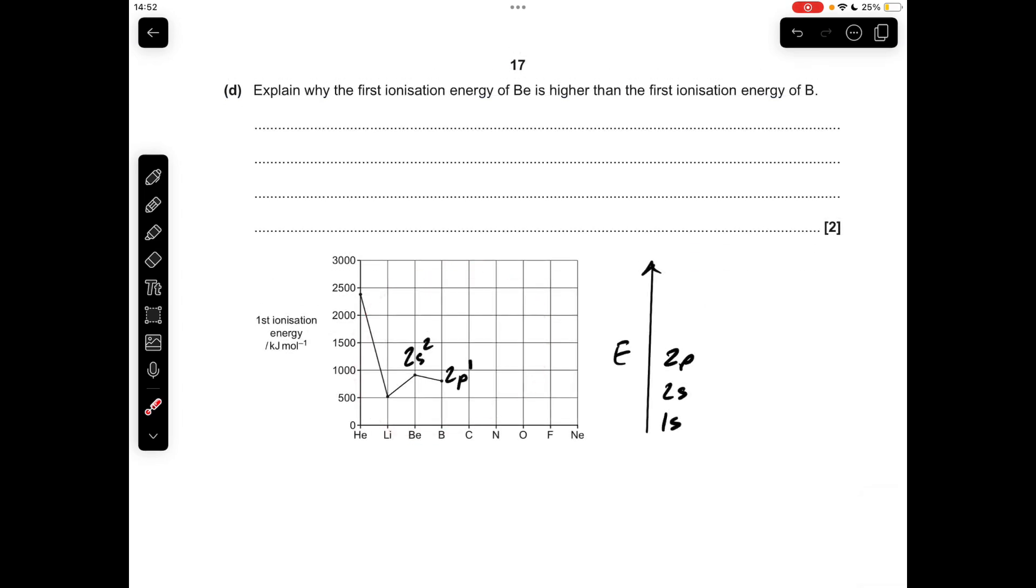Moving on to part D, so you'll notice I've copied the graph from the start of the question, and I've got a little energy axis here. So the reason why the first ionization energy of beryllium is higher than that of boron, it's down to the type of subshell that the electron's being removed from. So in beryllium, you've got a 2s2 configuration, so one of these electrons is being removed to ionize beryllium.